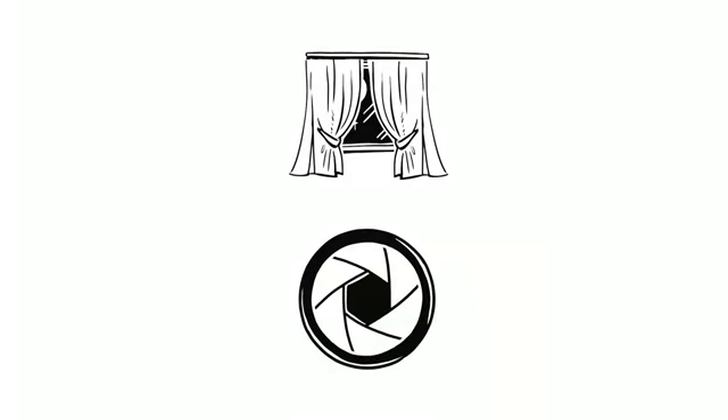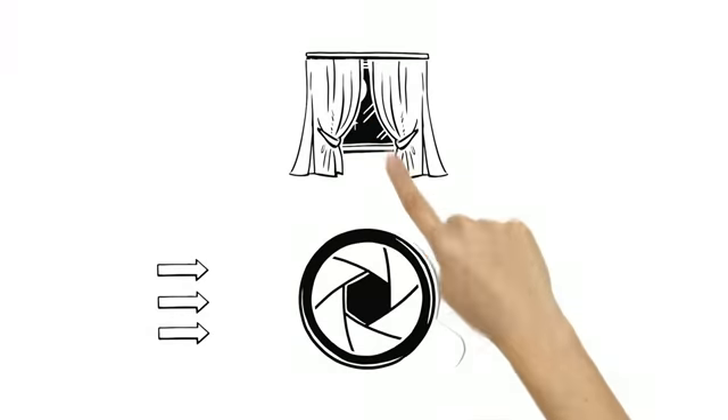Imagine the aperture as a pair of curtains. It controls the amount of light entering the lens. When it's dark, Mary wants to capture as much light as possible. To do that, she needs to open the aperture wider. If it's very bright, Mary draws the aperture curtains closer together. Otherwise, her picture will be overexposed.